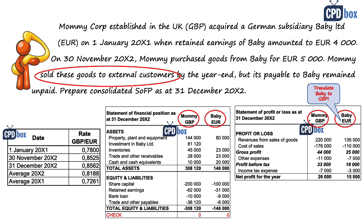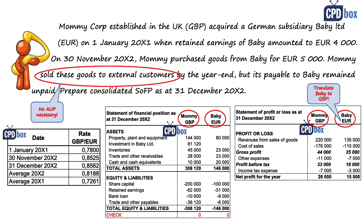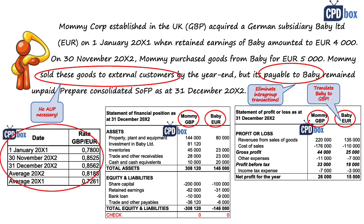The second point: there was an intra-group purchase of goods from Baby by Mommy, but the goods were sold by the year end. That's great because we do not need an adjustment for unrealized profit — all profit is realized since the goods left the group. However, there is an unpaid payable of Mommy to Baby at the year end, so we will have to eliminate it in the consolidation process.